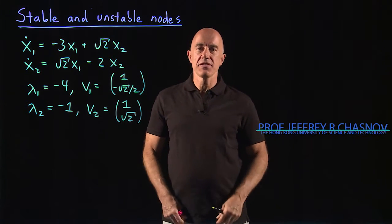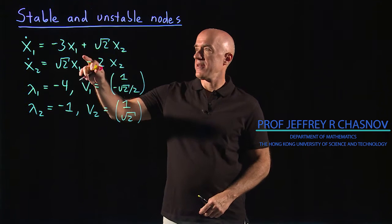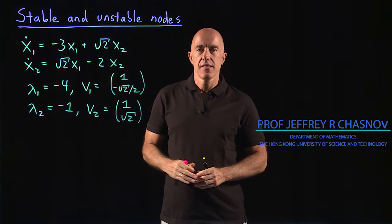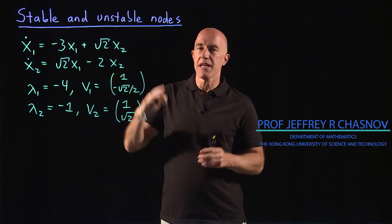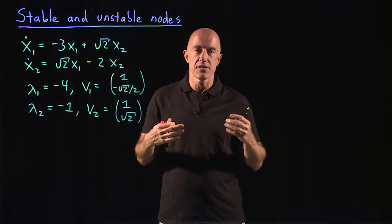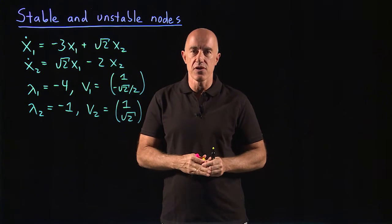So let's look at the phase portrait for a stable node. The phase portrait for an unstable node will be the same, just the directions of the arrows are reversed.